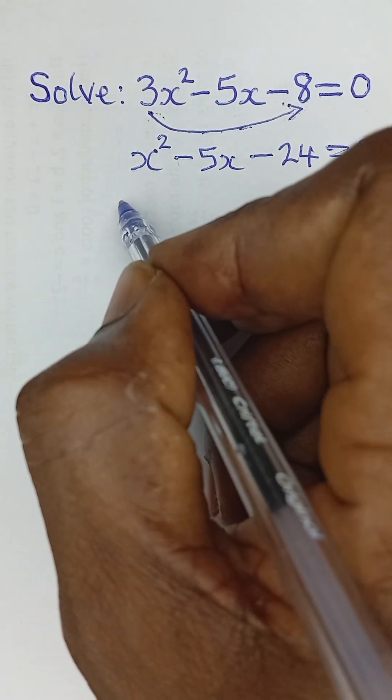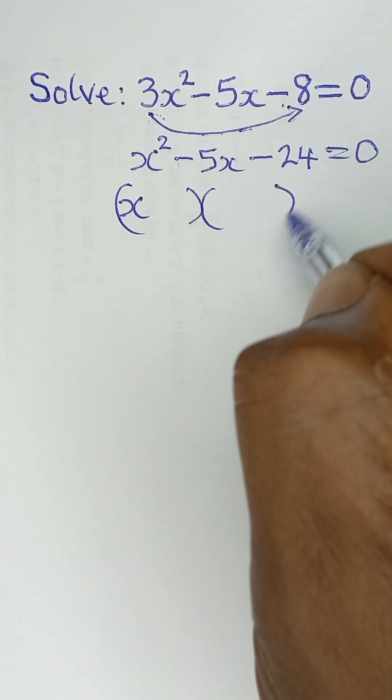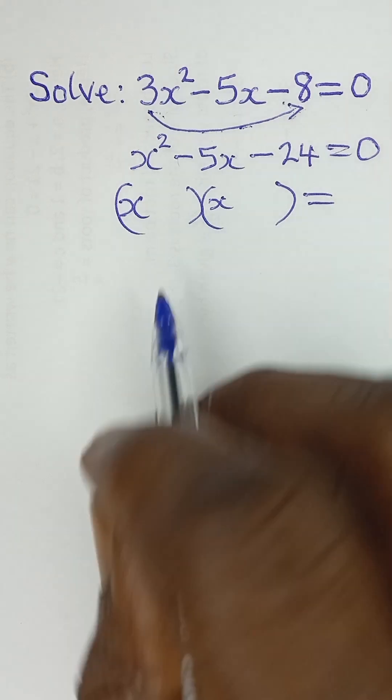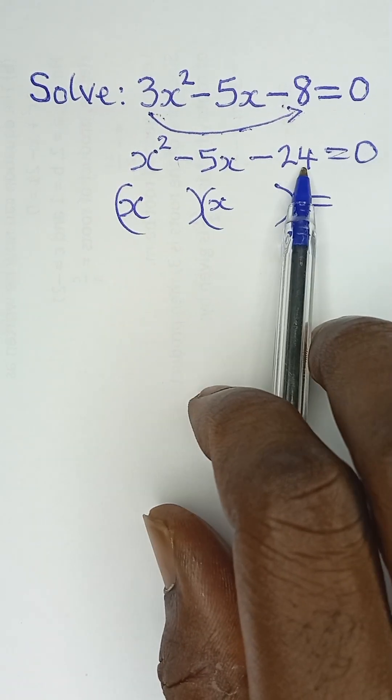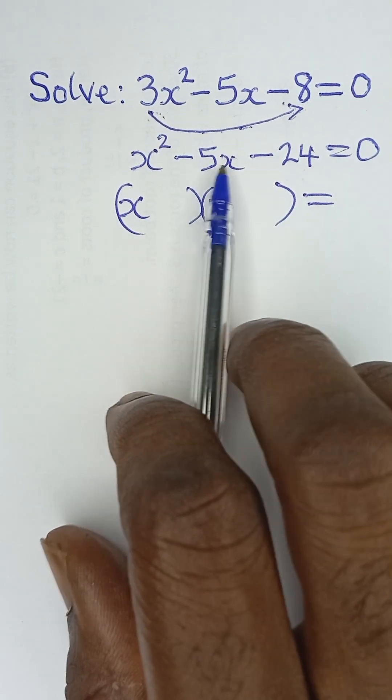Now, the easiest way to factor this quadratic equation is to open up bracket and put in x like this. And then look for two numbers such that when you multiply them, you are going to get negative 24. And when you add them, you are going to get negative 5x.